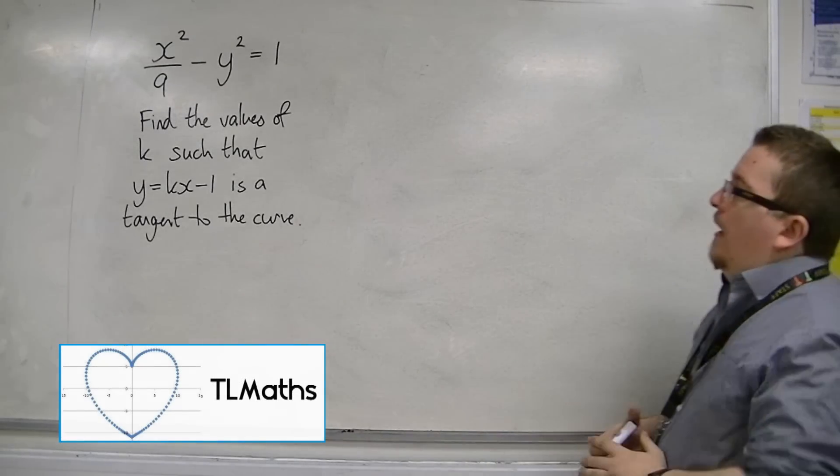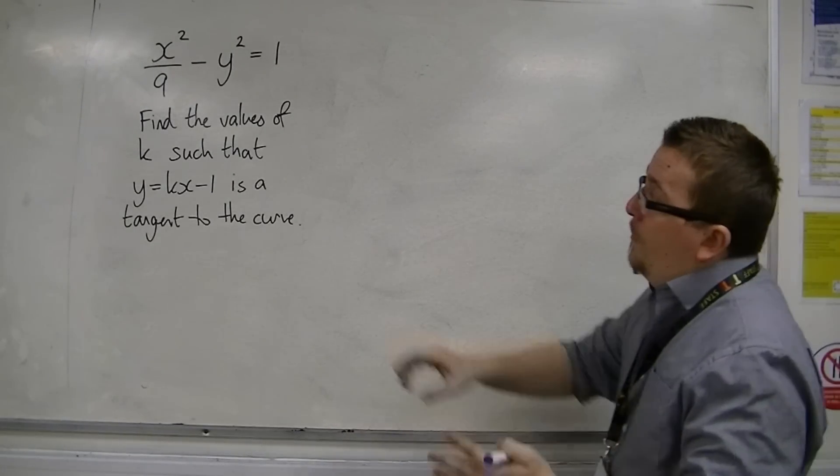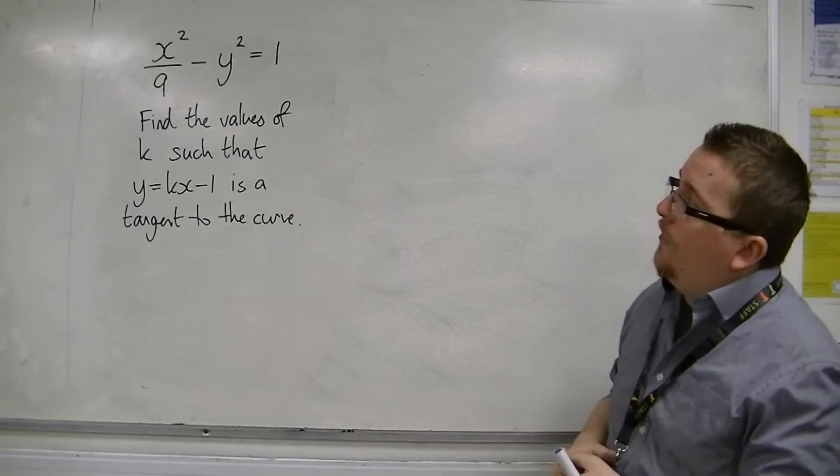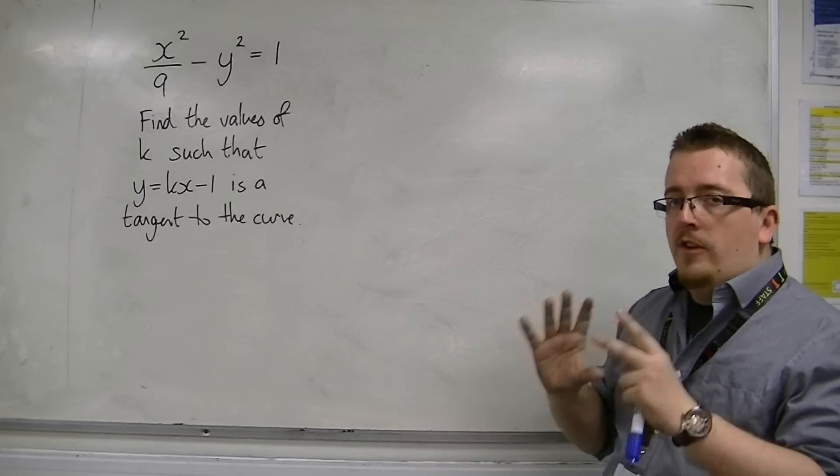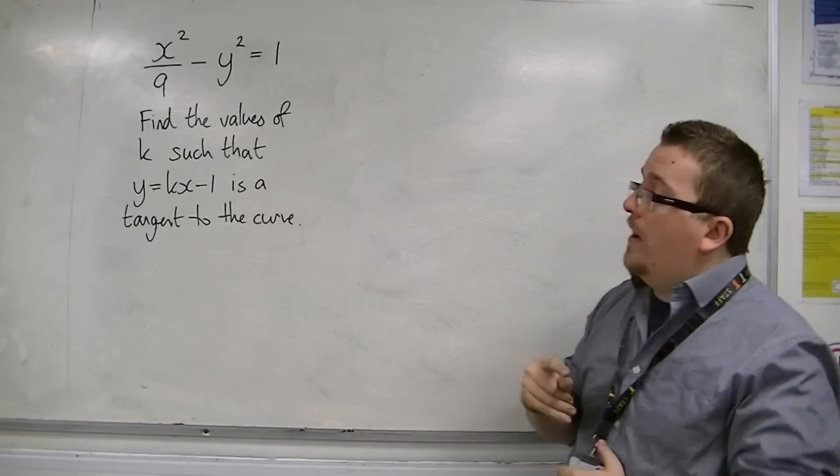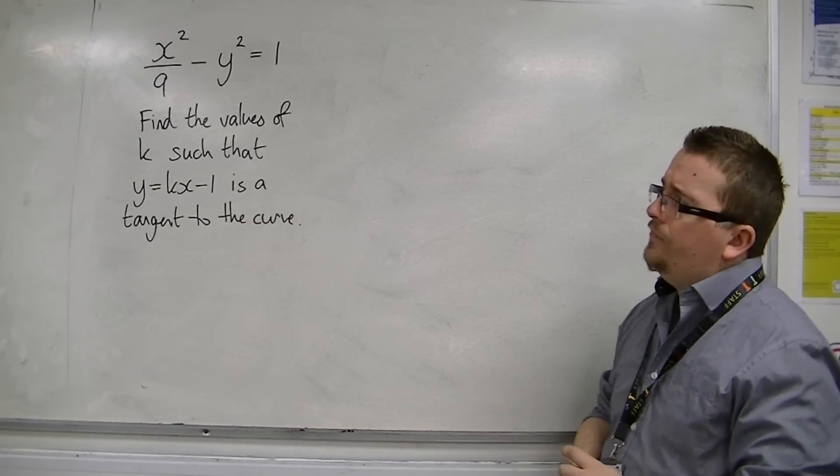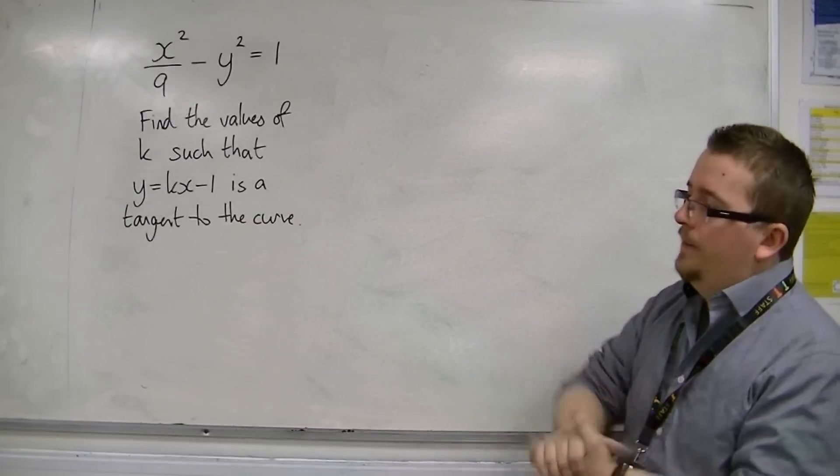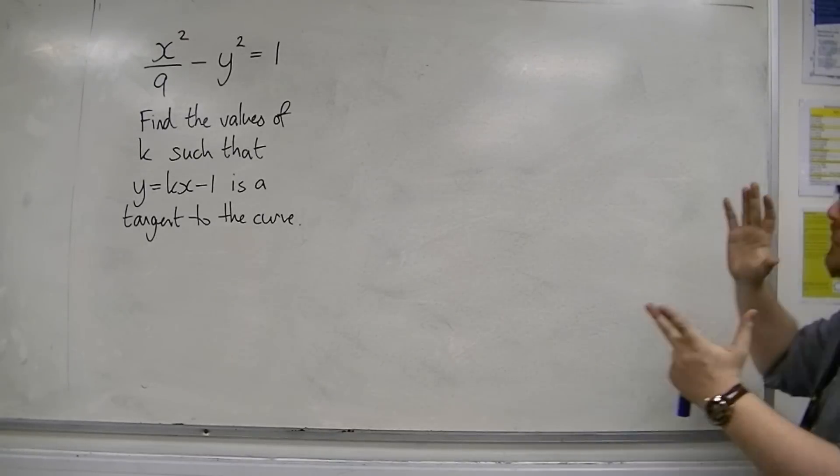So in this video, what we're given is the hyperbola x squared over 9 minus y squared equals 1. And we want to find the values of k such that y equals kx minus 1 is a tangent to the curve, rather, not the circle.